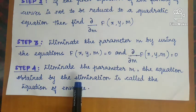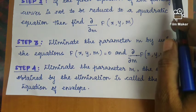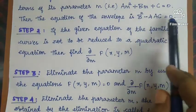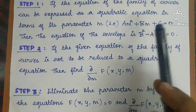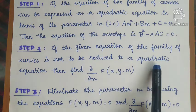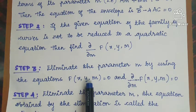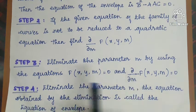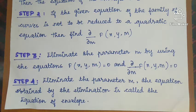Eliminate the parameter. The result is the answer — the envelope of the family of curves. This is the method of procedure to find the envelope. First, convert to a quadratic equation and apply b² − 4ac = 0. If that is not possible, take the first derivative with respect to the parameter, use the two equations together, and eliminate the parameter to get the envelope.